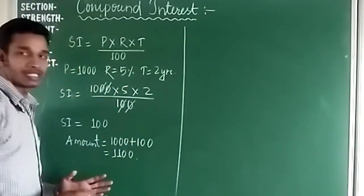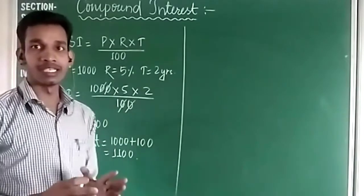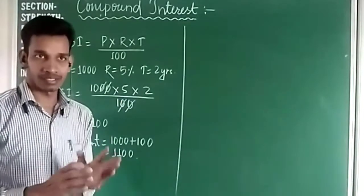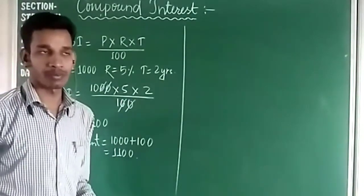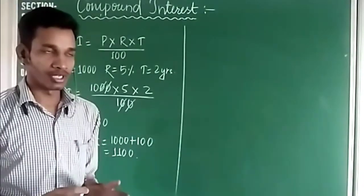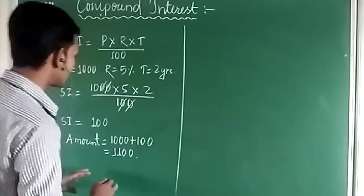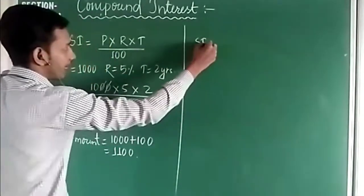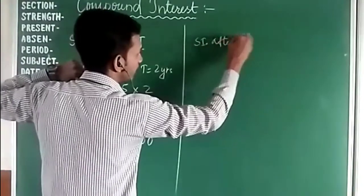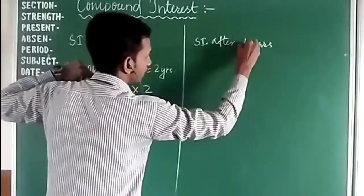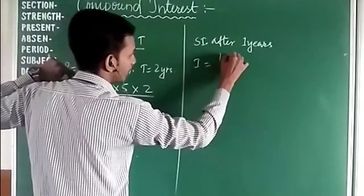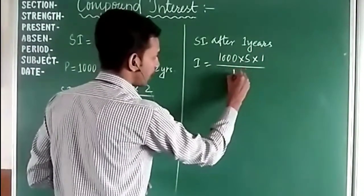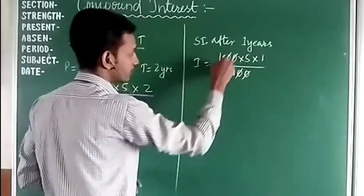Now let's understand compound interest. The method is the same as simple interest — the only change is that the amount after one year becomes the principal for the second year, meaning the principal changes every year. Taking the same example with principal 1000 and rate 5%, first we find the simple interest for one year: 1000 into 5 into 1 divided by 100.